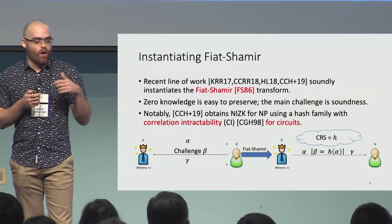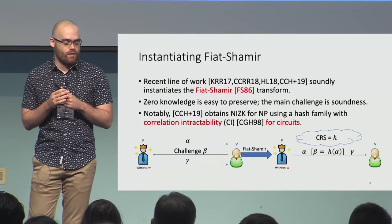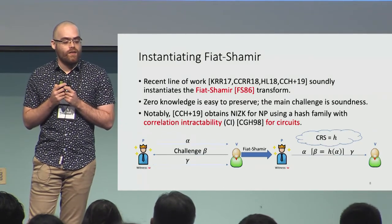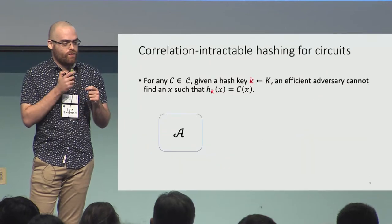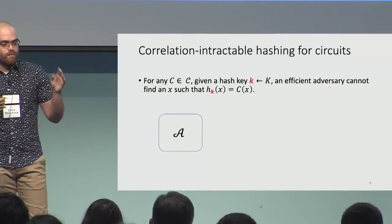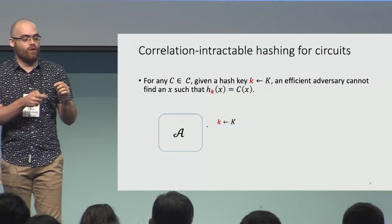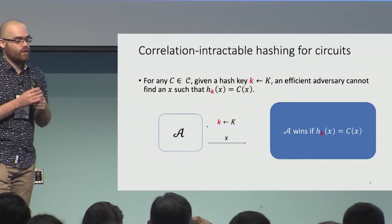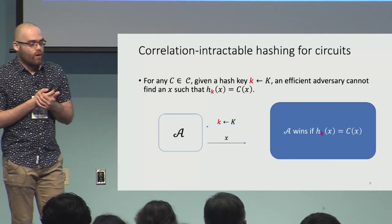CCH+19 overcomes this challenge and builds a NIZK system for all of NP by using a hash family with a special property called correlation intractability for circuits. Correlation intractability was first defined by Canetti, Goldreich, and Halevi. We say a hash function is correlation intractable for a circuit class if for any circuit C in that class, given a correctly sampled hash key, no polynomial time adversary can find an input x such that hash(x) = C(x).